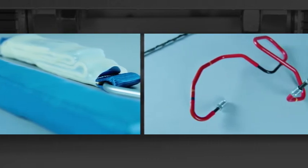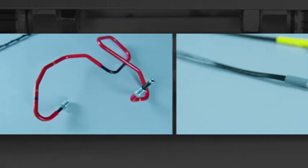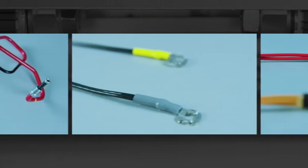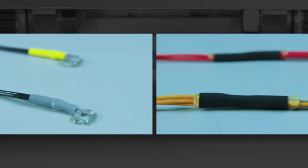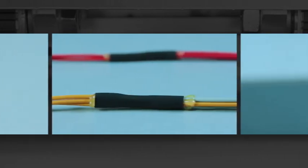Whatever your application, TE Connectivity's heat shrink tubing is a great alternative to taping, molding, or potting for your insulation, protection, sealing, and organization needs.